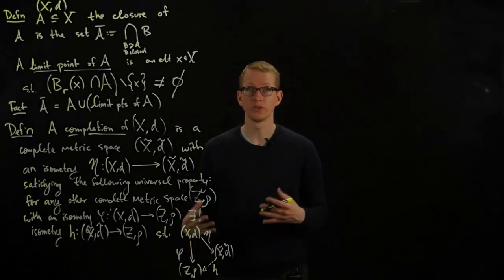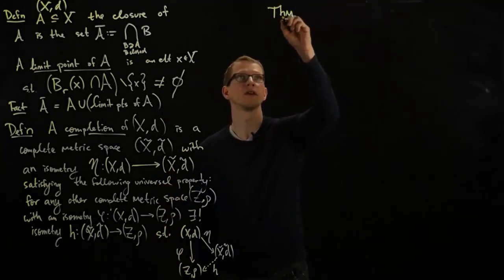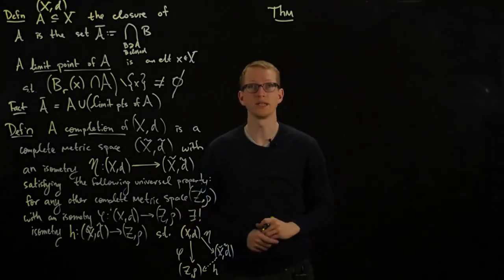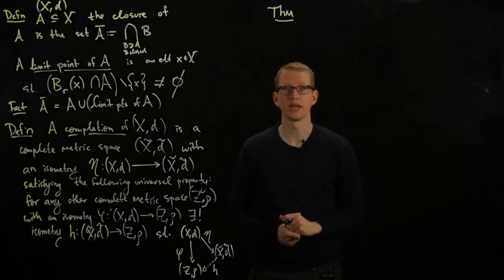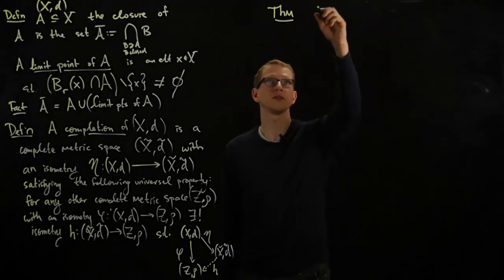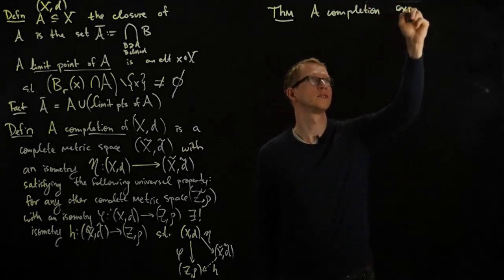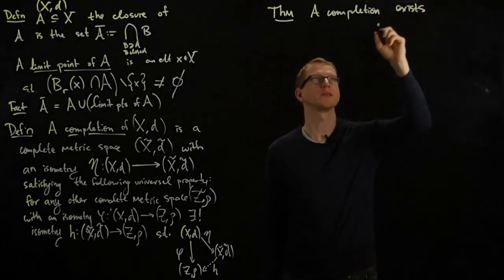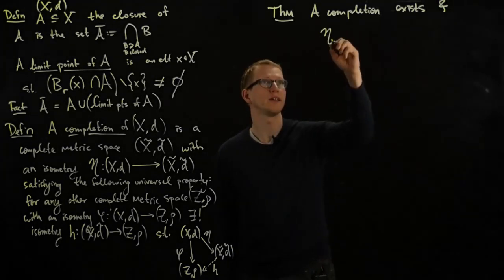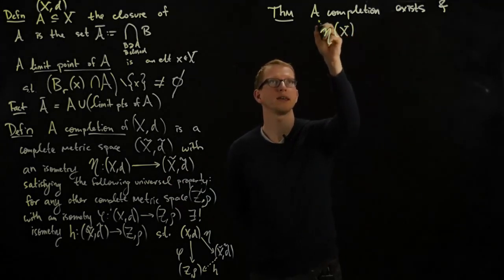So this might sound like a strange definition, but there's a concrete theorem that makes this a little bit more understandable. The upshot of this result is that uniqueness is immediate from this universal property, as we've seen for other situations where we've seen universal properties. So the theorem is that a completion always exists for any metric space, and furthermore, it satisfies the following condition. That if I take the image of x, and I calculate the closure,